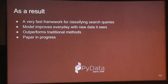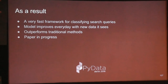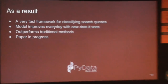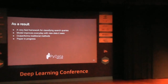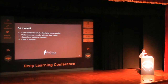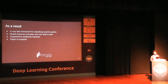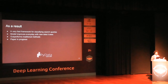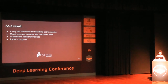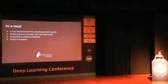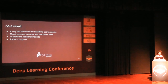As a result, a very fast framework for classifying search queries was implemented. The only thing you need to take care of is having a lot of data — training on 800 million search queries. With neural networks, you can do online training and update the weights, so the model improves every day. These models outperform traditional methods, and the paper is in progress.